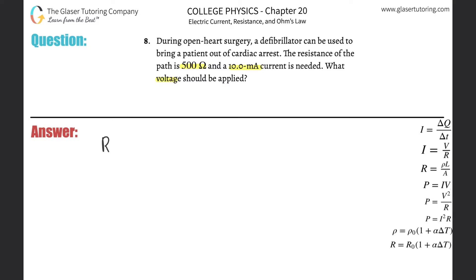Alright, so we know the resistance R, that's going to be 500 ohms. We also know the current I. They gave that to us in milliamps, and we know that we're going to need to convert that into amps. So simply just multiply that by 10 to the minus 3, and that's then the value in amps.